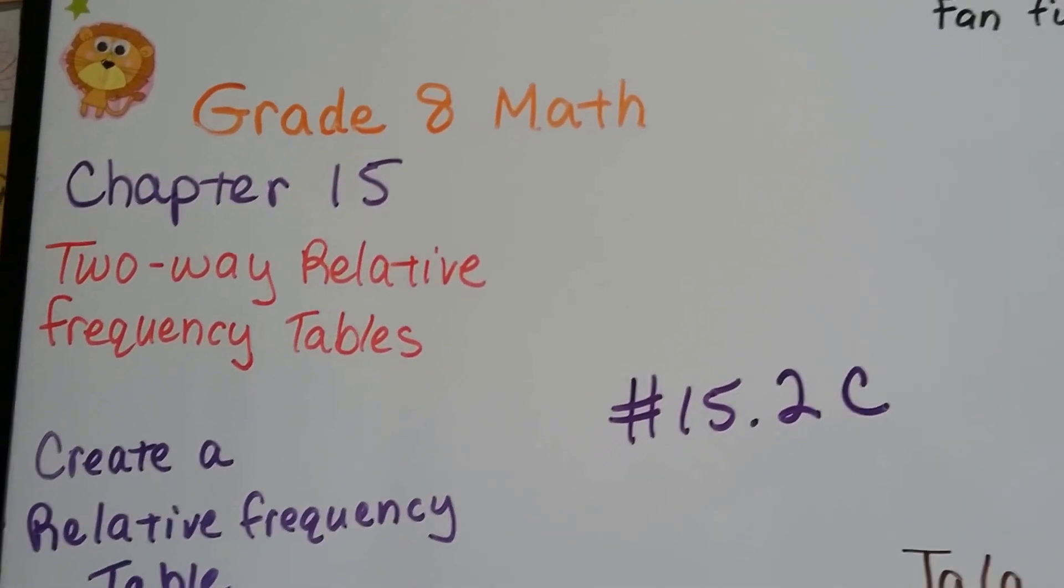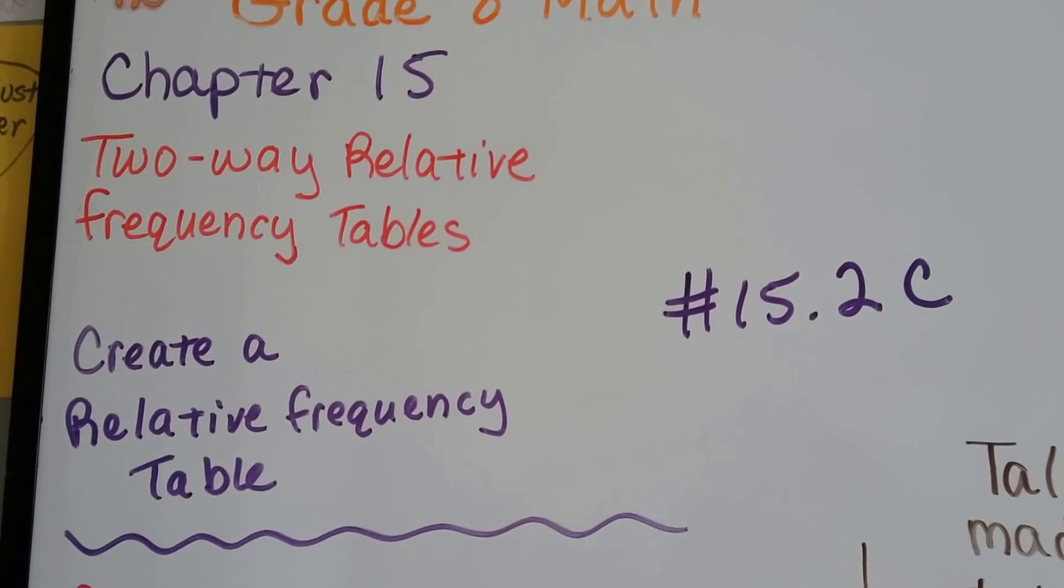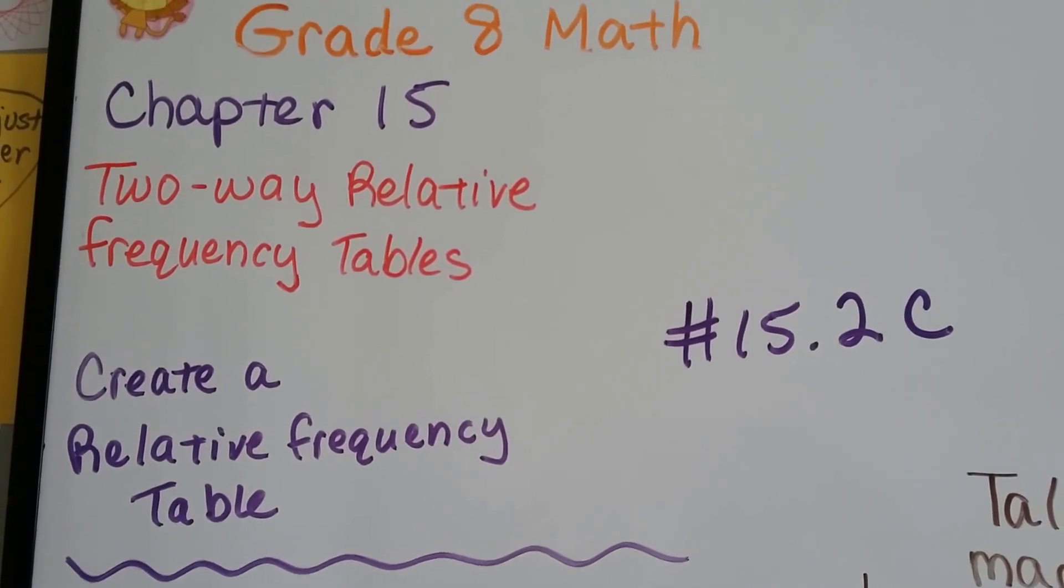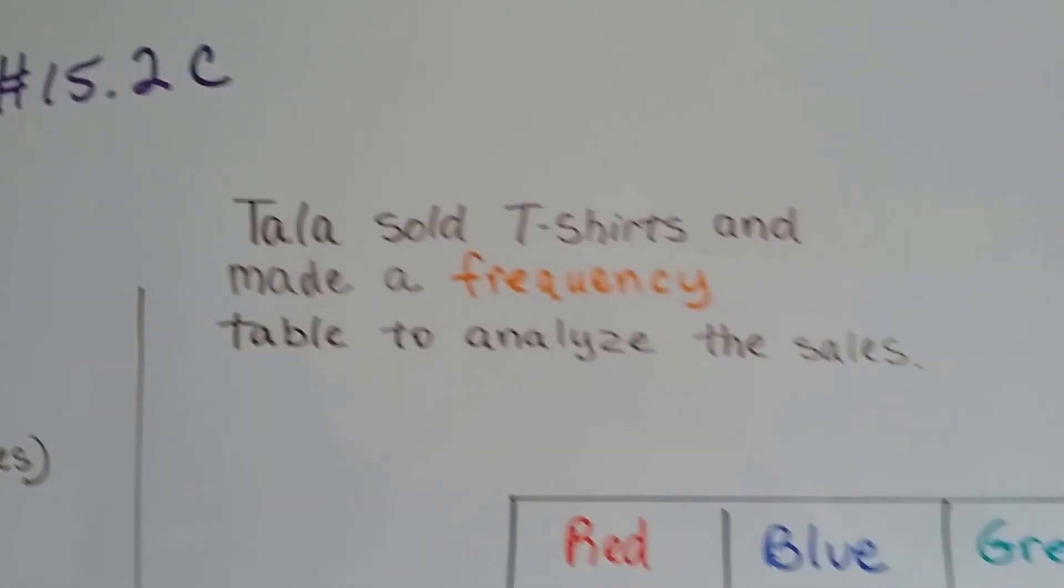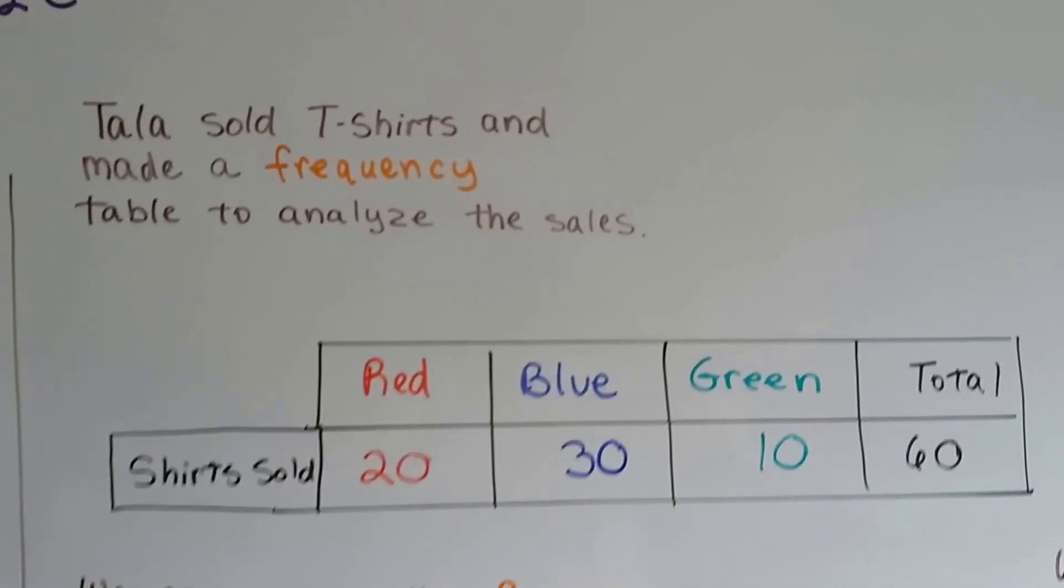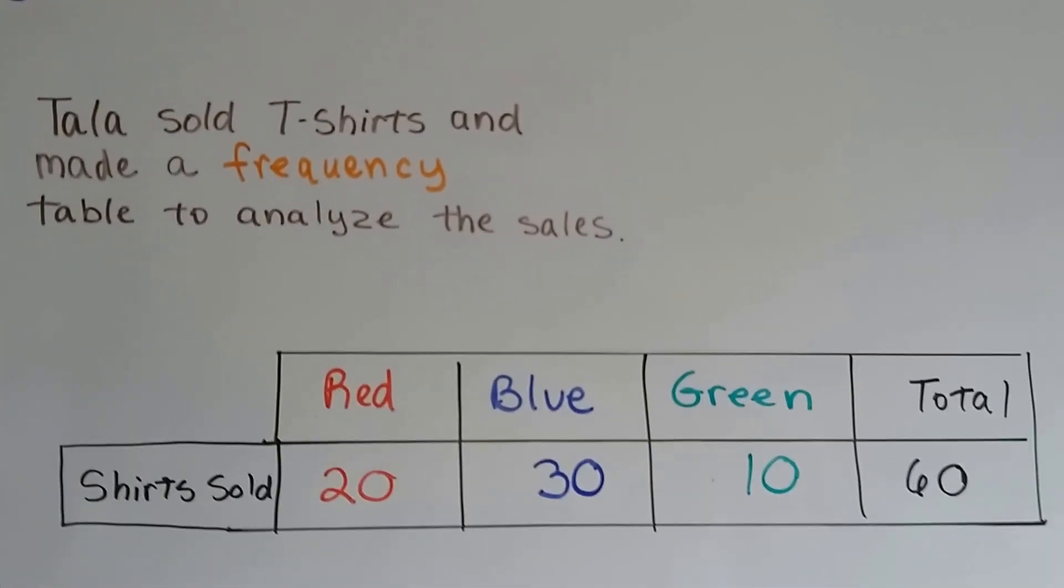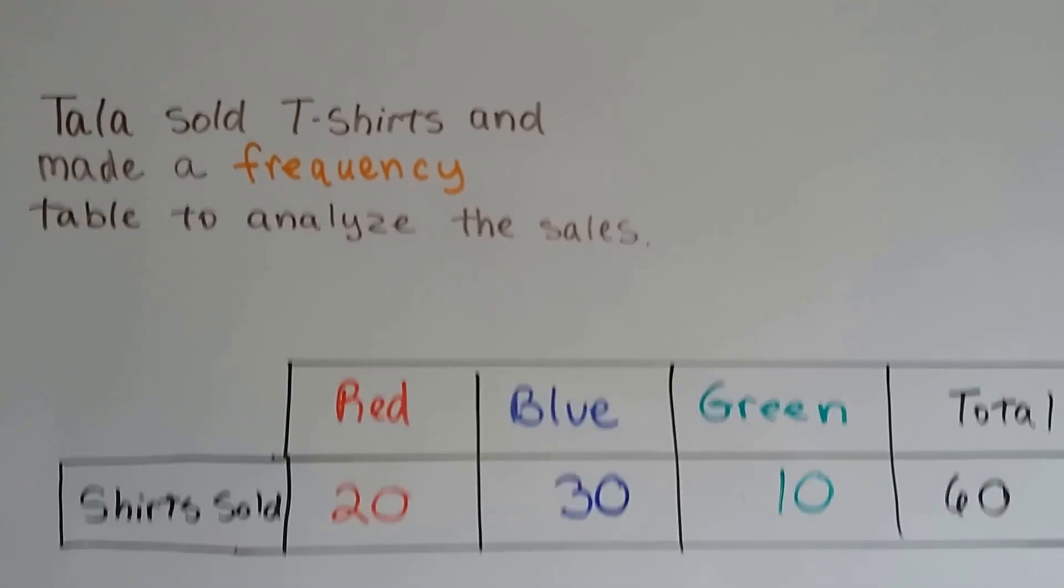Grade 8 math number 15.2c. We're going to create a relative frequency table. So Tala sold t-shirts and made a frequency table to analyze the sales. So this is just a basic plain old frequency table.